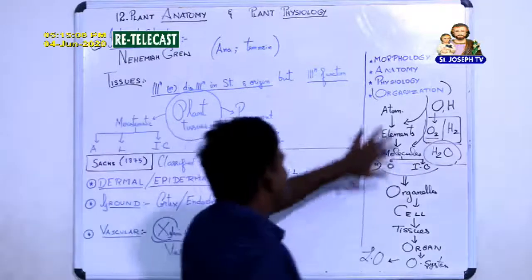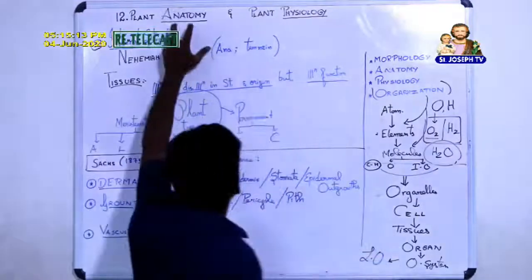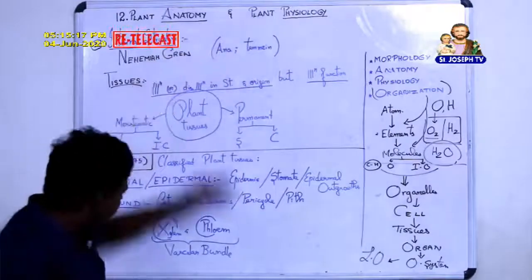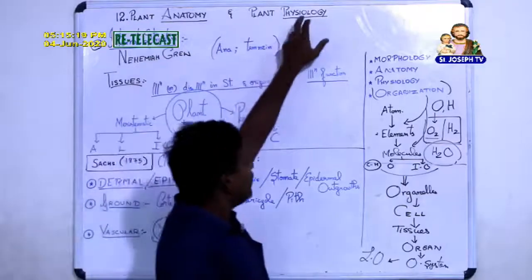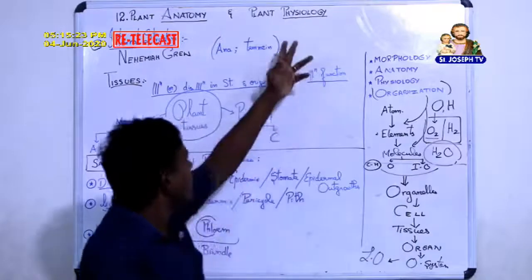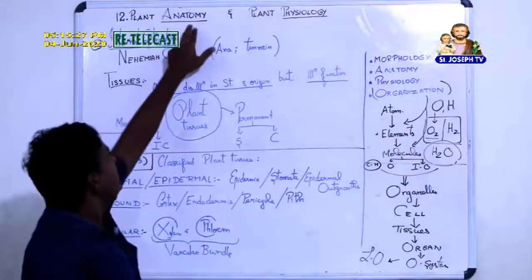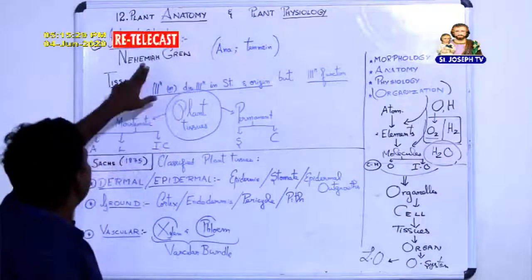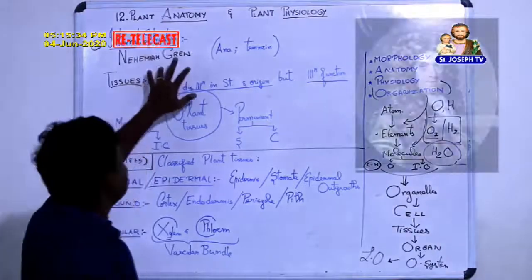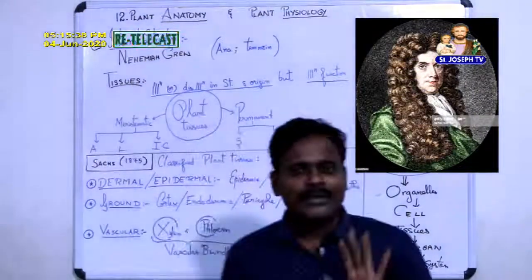Now we will come to the lesson. First, internal structure — we are going to learn two important concepts: plant anatomy and plant physiology. Physiology covers two functions: photosynthesis and respiration. In anatomy, the internal structure of the plant system was described by Nehemia Gru. His photo will be displayed. He was the first person to introduce and publish the internal structure of plants.